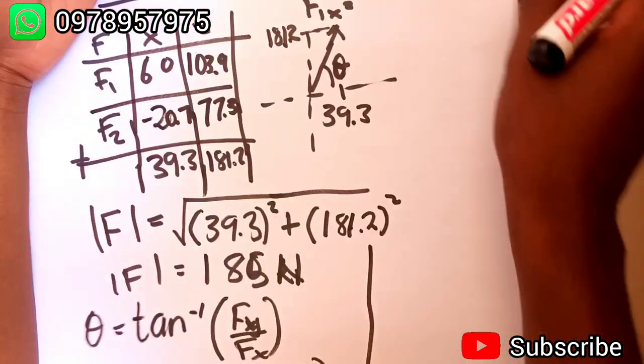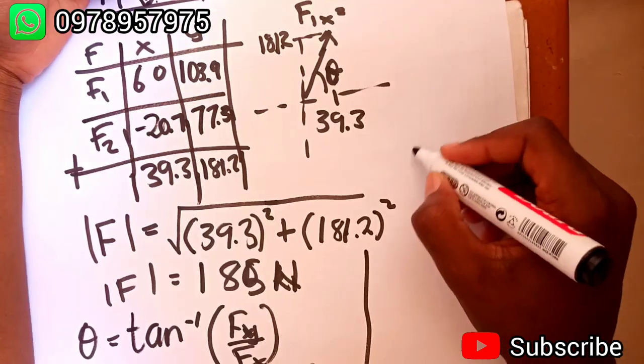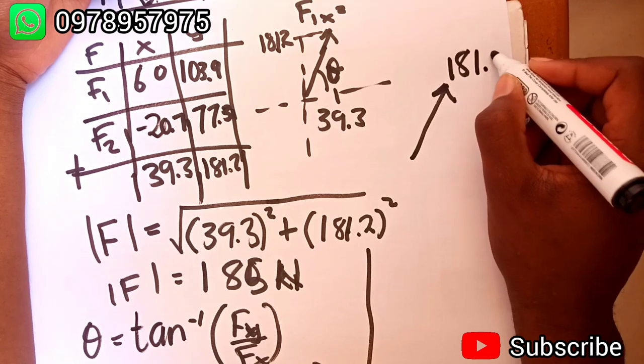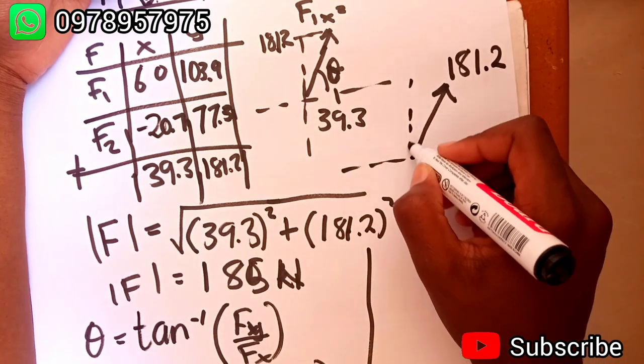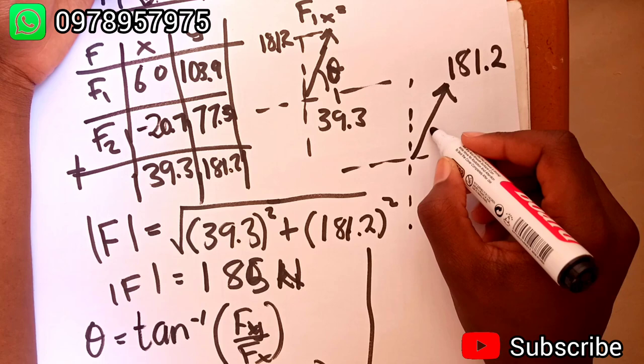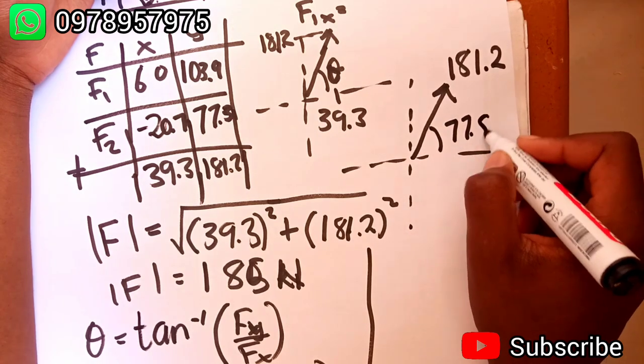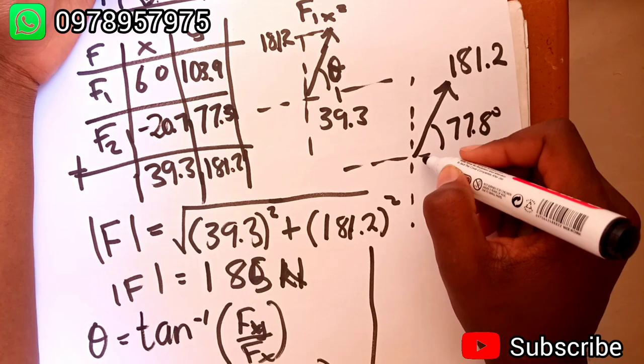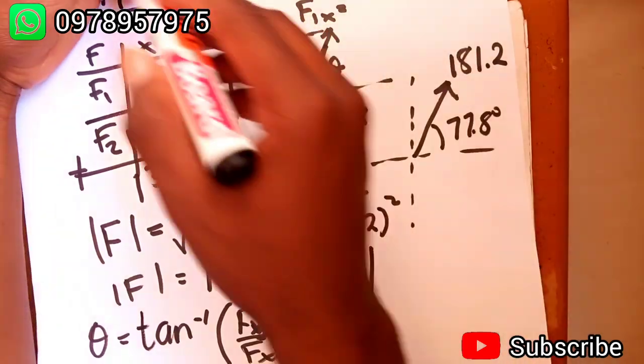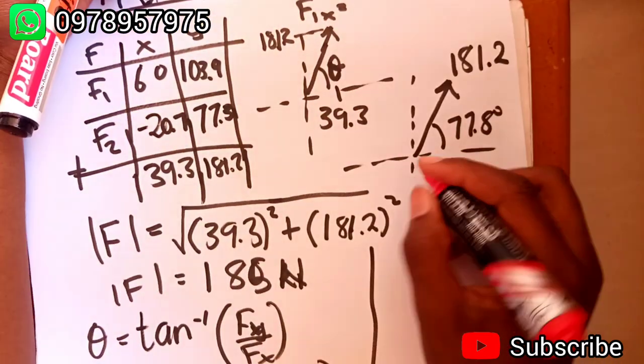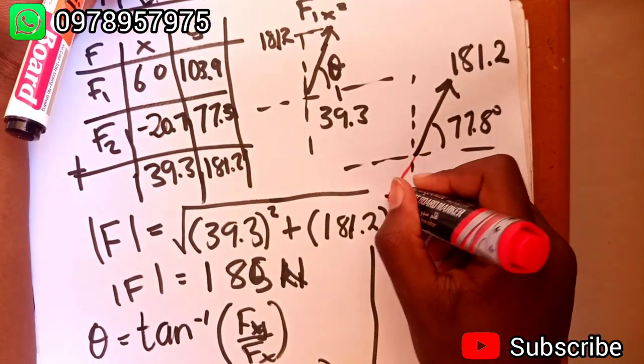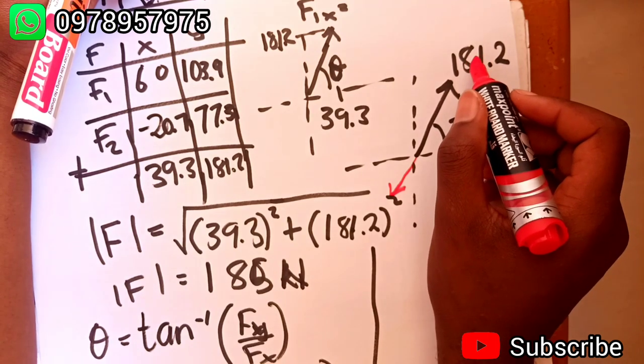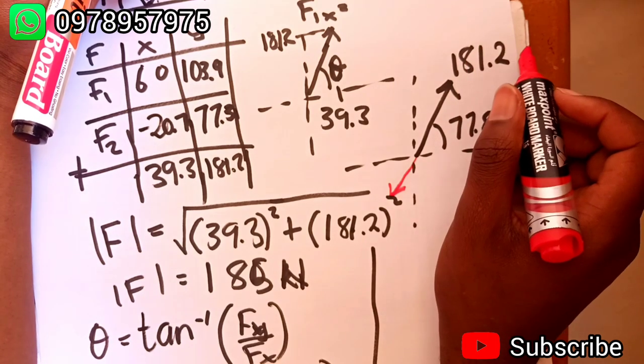We have these forces here. If you want the force to be equal to zero, there's a force that we must apply here. These forces are giving us a resultant, this one here, that's 181.2 at 77.8 degrees. So now the force has to oppose this one.